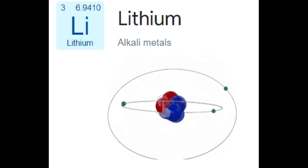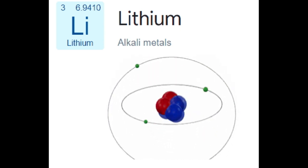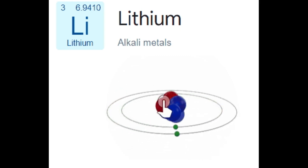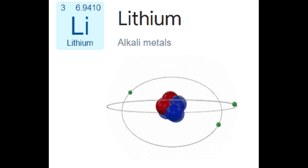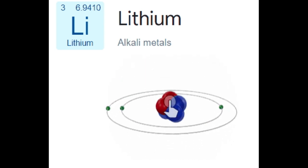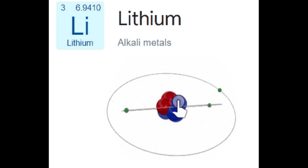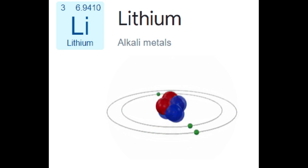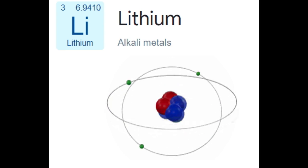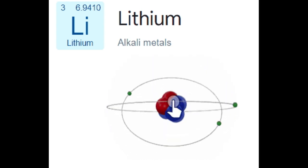Experiment 5 — Classroom Simulation. Objective: Simulate the behavior of lithium ions in a classroom setting. Procedure: Use modeling kits or illustrations to represent lithium atoms and ions. Discuss simulated chemical reactions involving lithium in different contexts, such as battery operation and chemical reactions. Safety precautions: Ensure the use of safe, non-reactive materials for simulations in a classroom setting. These experiments can be tailored to various educational levels, providing students with hands-on experience and a deeper understanding of lithium's properties and applications.